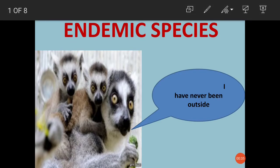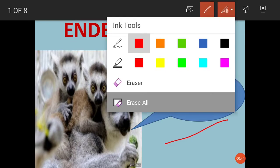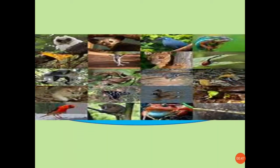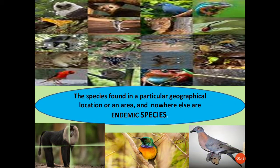You can see in this picture it clearly depicts endemic species — the caption says 'I have never been outside.' So now you have understood the definition of endemic species: the species found in a particular geographical location or area and nowhere else are endemic species.